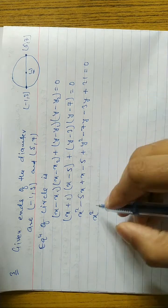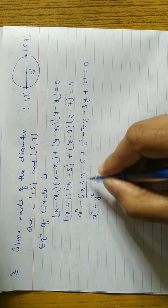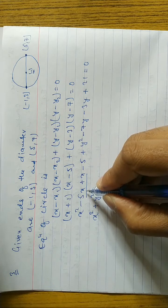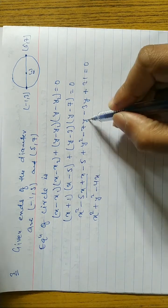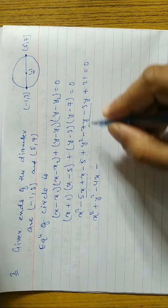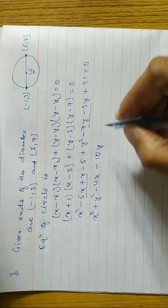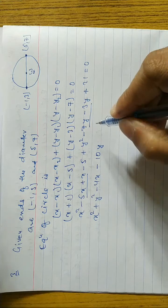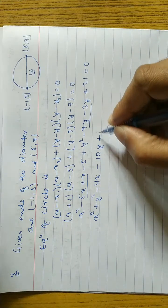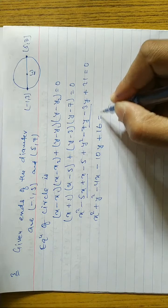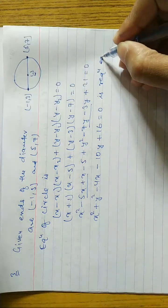Simplifying: x² + y² — combining -5x + x = -4x; combining -7y - 3y = -10y; and constants -5 + 21 = +16. So: x² + y² - 4x - 10y + 16 = 0. This is the required equation.